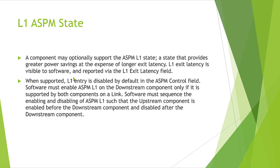L1 ASPM uses a handshake mechanism and has longer entry and exit latency. This state provides greater power savings compared to the L0s state. When supported, L1 entry is disabled by default in the ASPM control field. Software must enable ASPM L1 on the downstream component only — meaning our DUT which is the downstream component needs to have the L1 capability supported, then you must configure the ASPM control field. By default that L1 capability is 0. If the endpoint does not support L1, there is no need to configure the ASPM control fields.